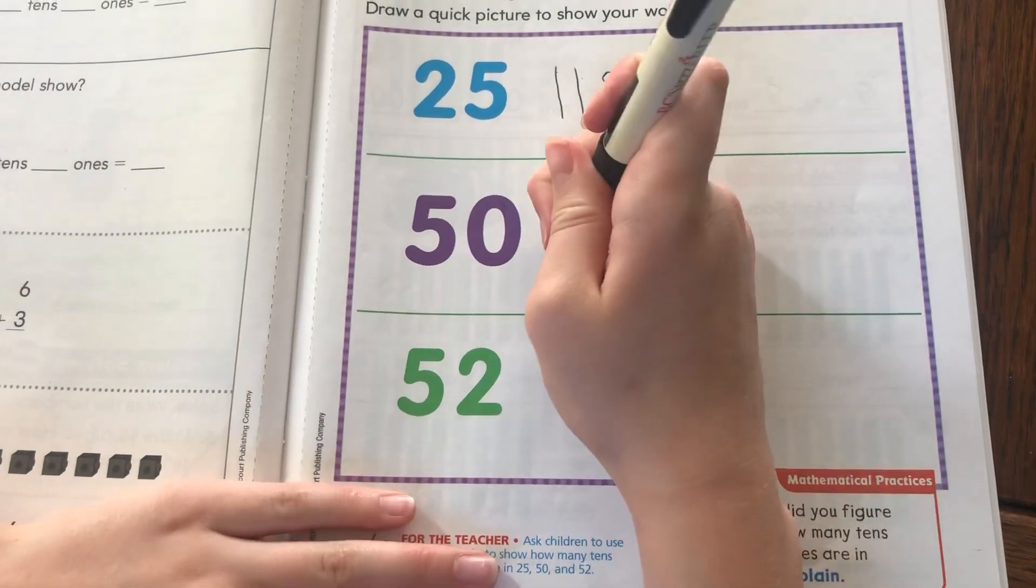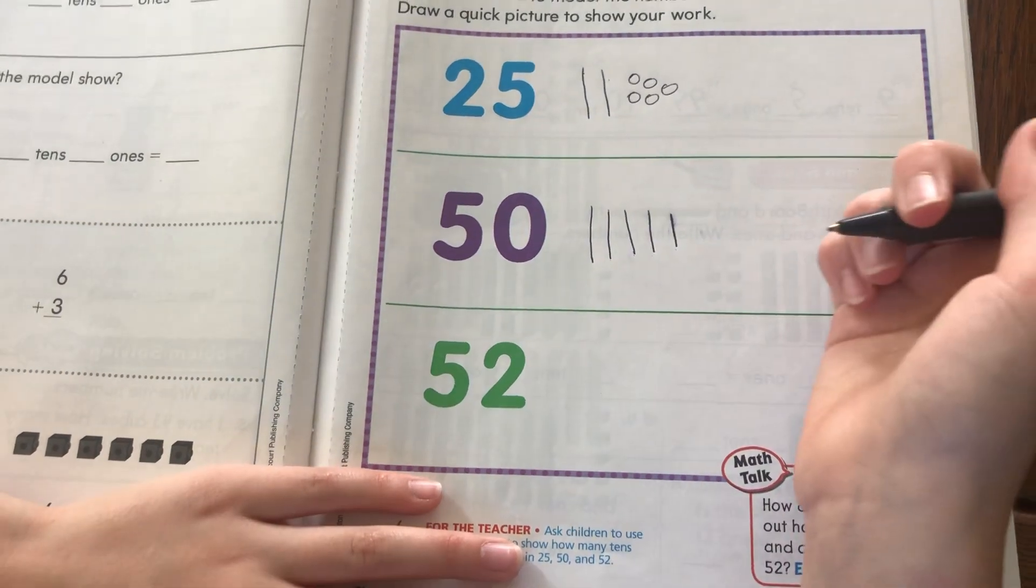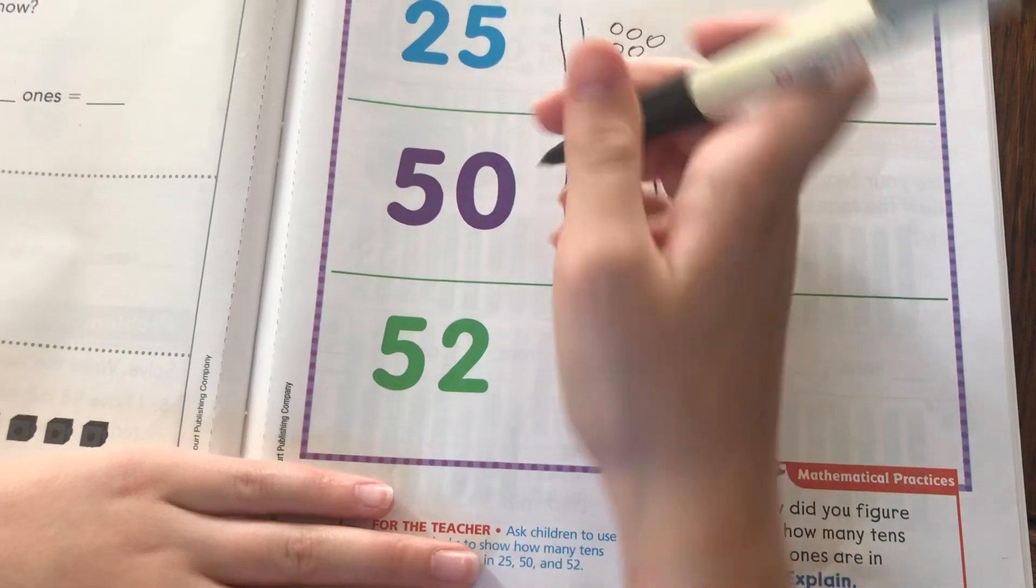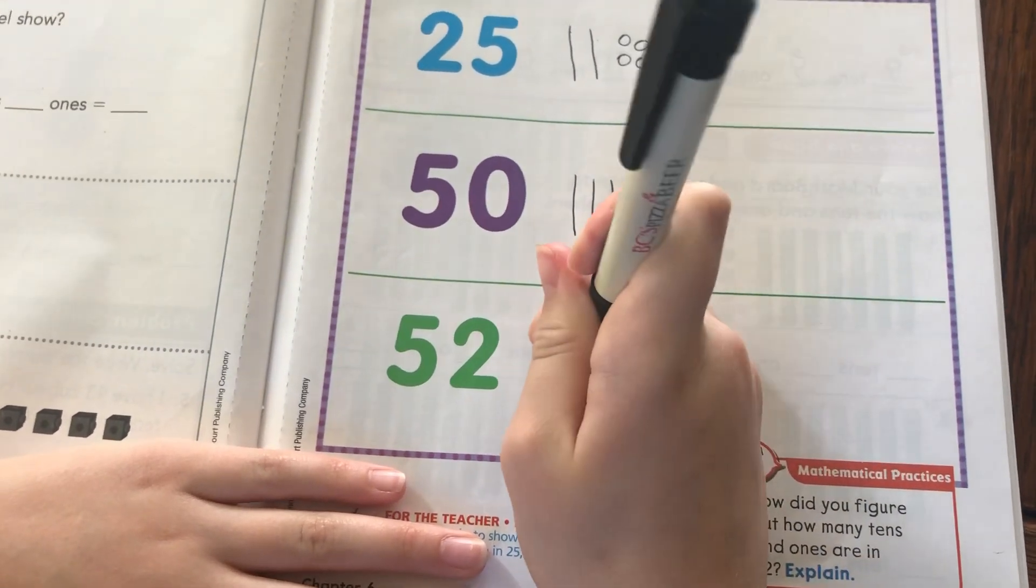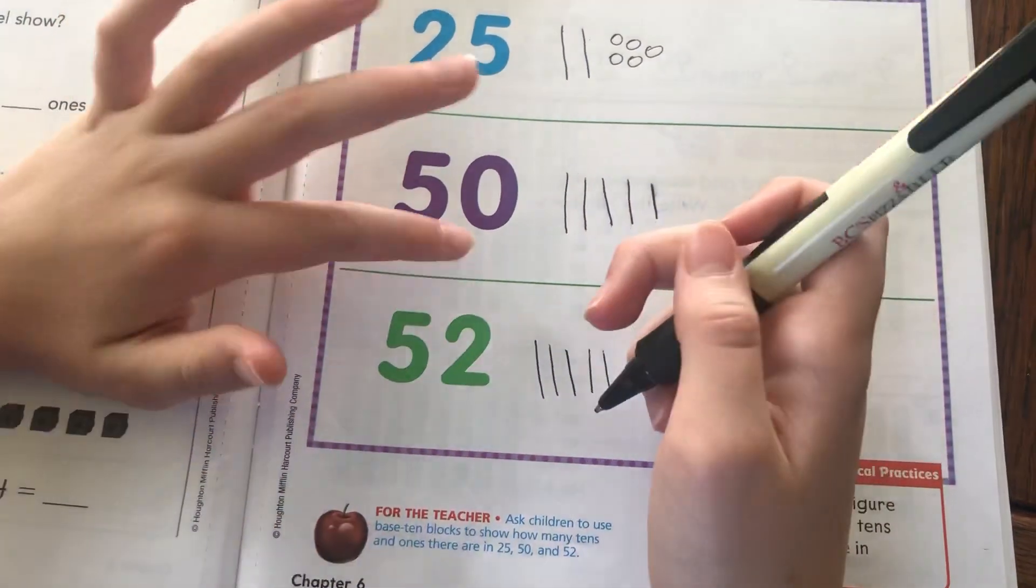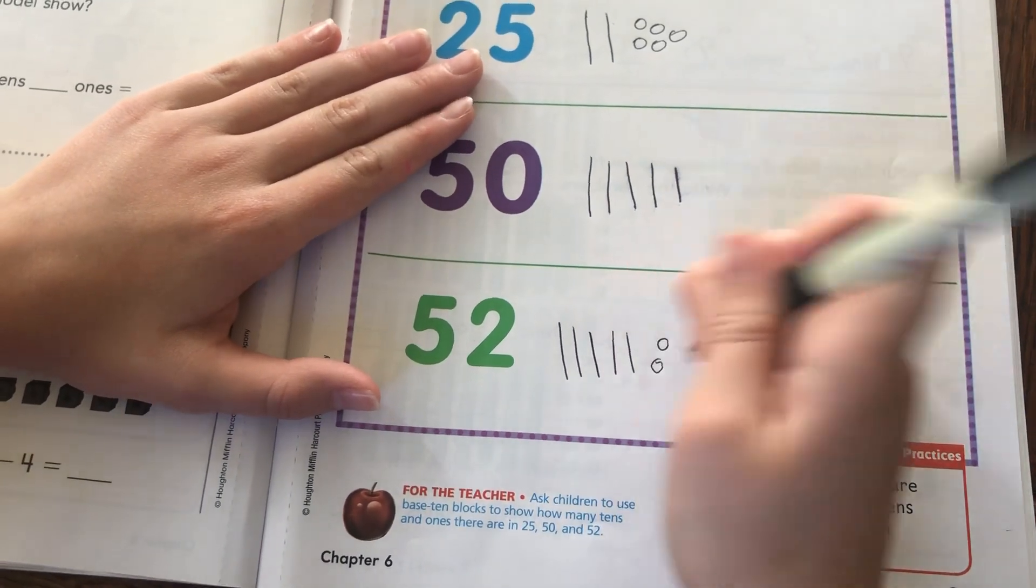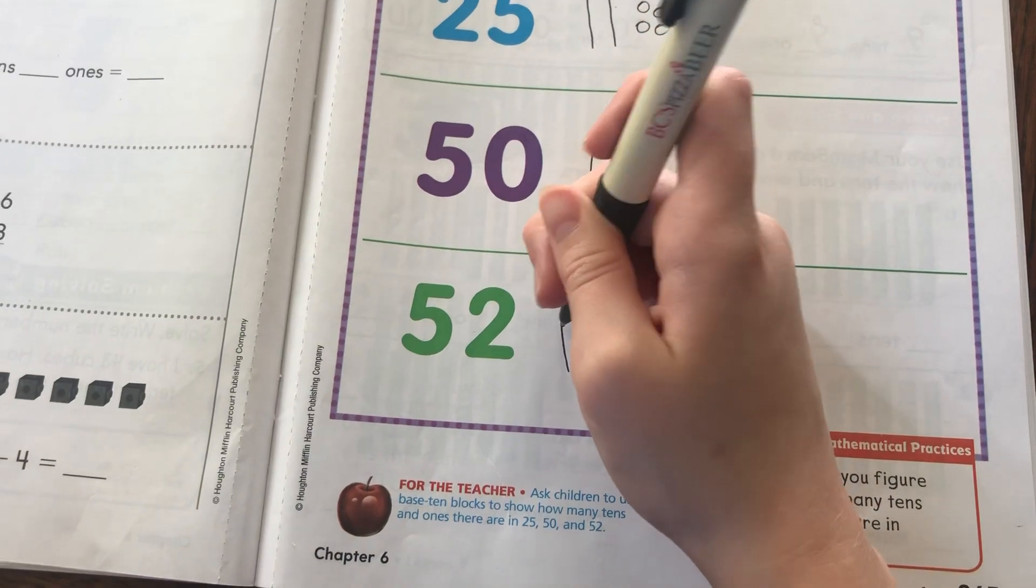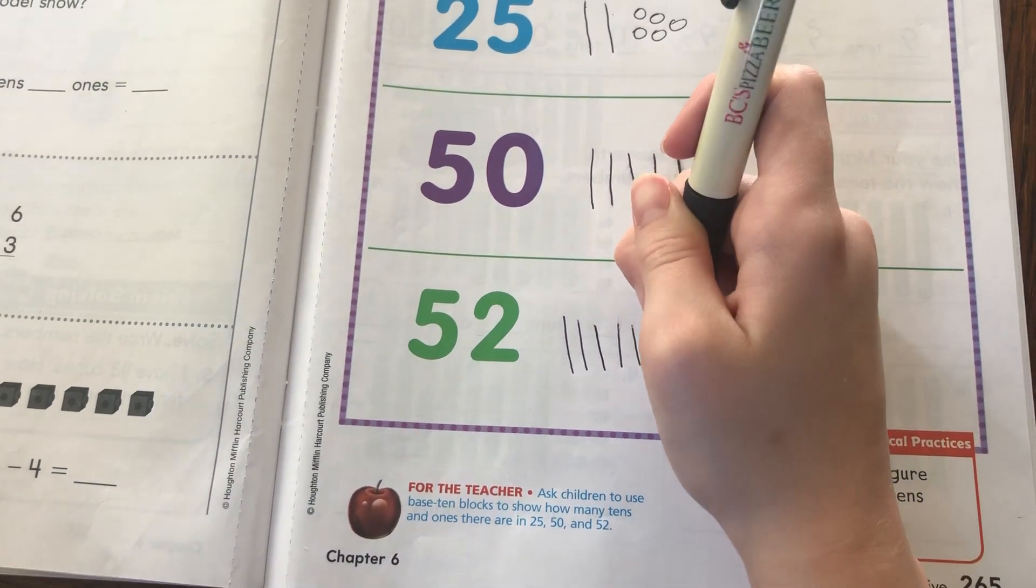Over here we got 52, so again we're going to do five lines because 10, 20, 30, 40, 50. But see, we have a two here, so we're going to have to do one, two lines. We have two ones. And if I count this out we get 10, 20, 30, 40, 50, 51, 52.